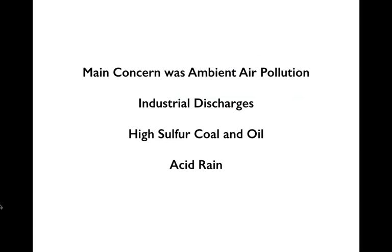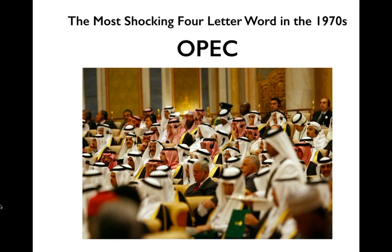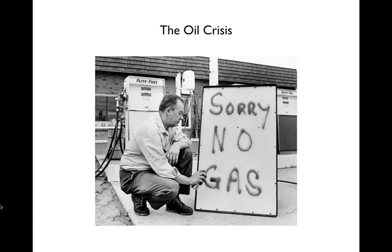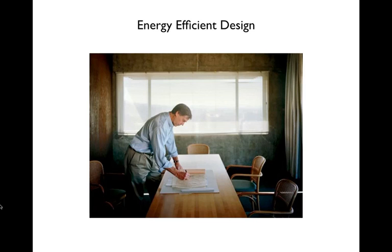We were still stuck with outdoor air pollution problems. The other thing that happened in the 1970s is that OPEC — the Organization of Petroleum Exporting Countries — started setting limits on the amount of petroleum they were producing. This drastically affected oil supplies in the United States and Europe. Gasoline was non-existent in some places and prices skyrocketed, causing a lot of concern not just about ambient air quality but also about the availability and price of these resources.